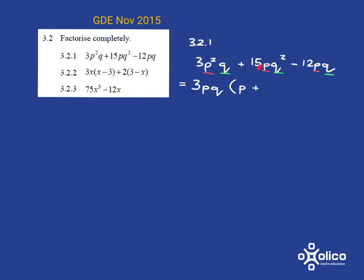What about here? Well, we've taken out a 3, so from the 15 we've got 5 left. We've taken out the p. And from the q squared we've taken out a q, so we have q left. And then for this one, from the 12 we've taken out a 3, so we have 4 left. And then we have taken out the p and the q. So we've got none of those left. And there we factorize nicely.